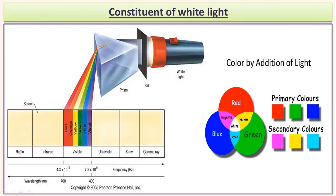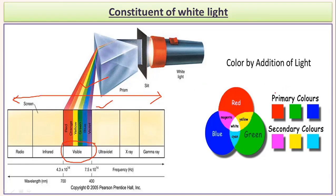Now let's understand the concept of color. The white light ray which we see consists of seven different colors. It is part of the electromagnetic spectrum. Out of that, we are able to see white color, which is actually a combination of seven different colors.